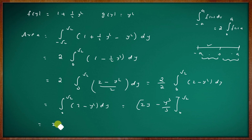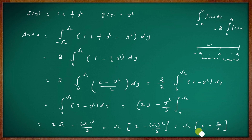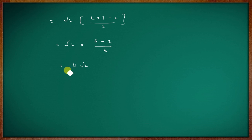Applying limits: [2y − y³/3] from 0 to √2 = 2√2 − (√2)³/3 = 2√2 − 2√2/3 = √2(2 − 2/3) = √2 · (6−2)/3 = 4√2/3.